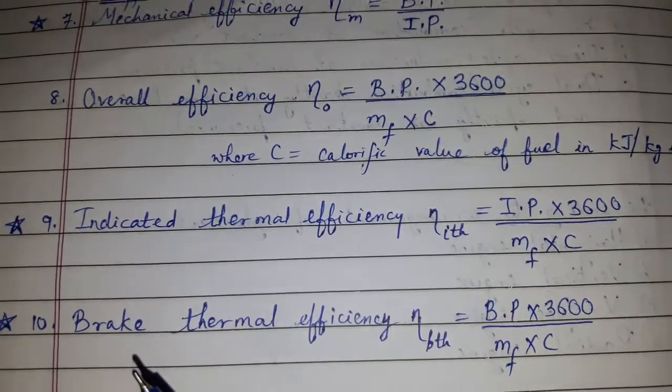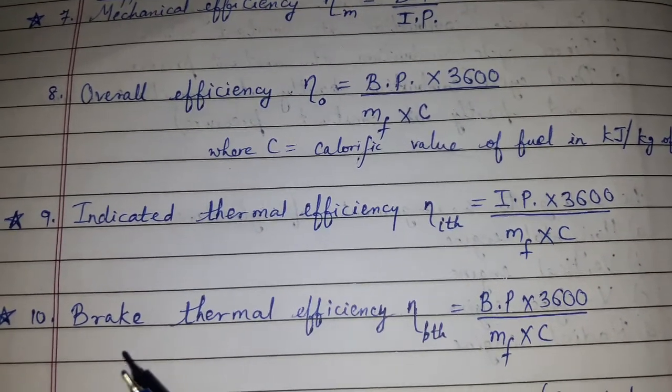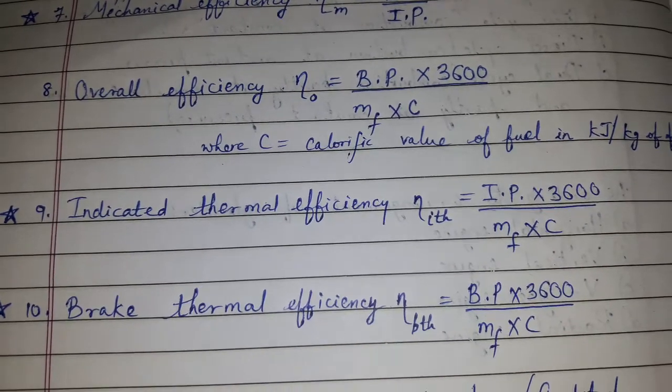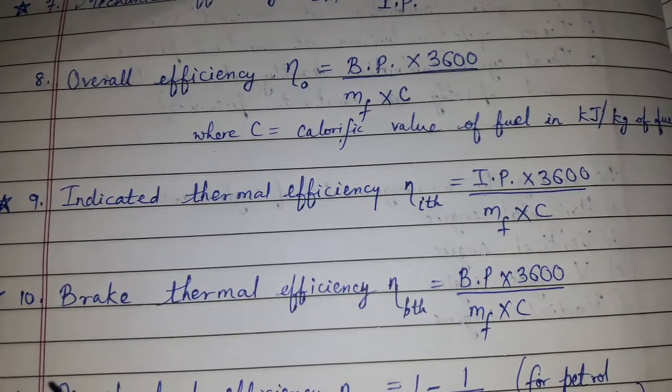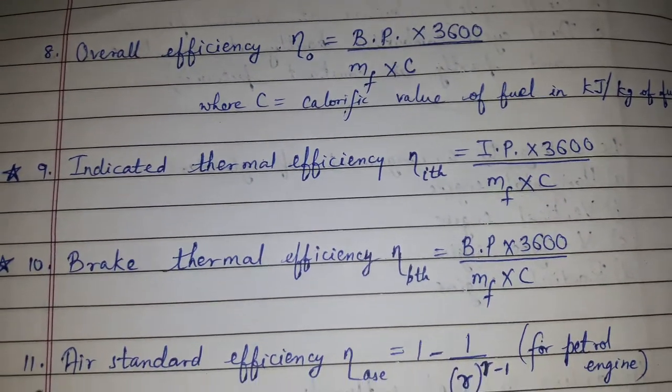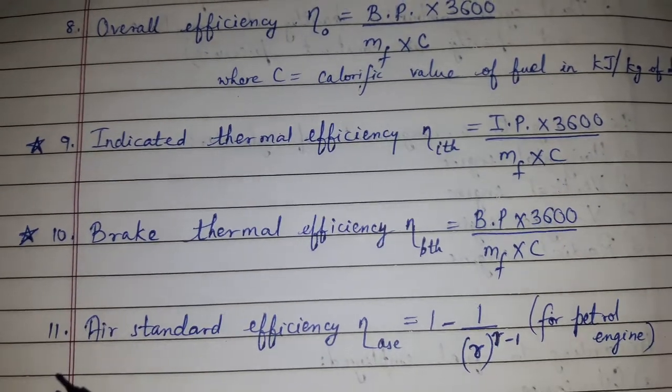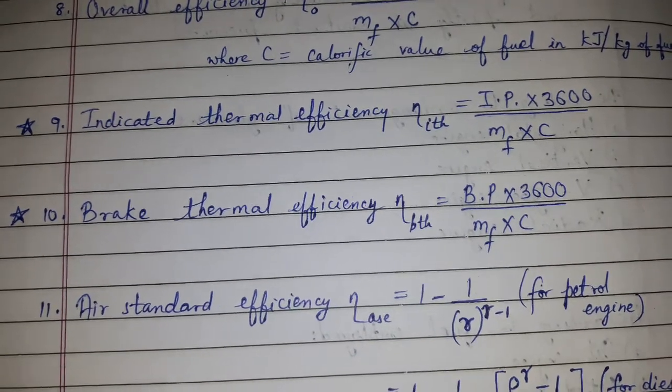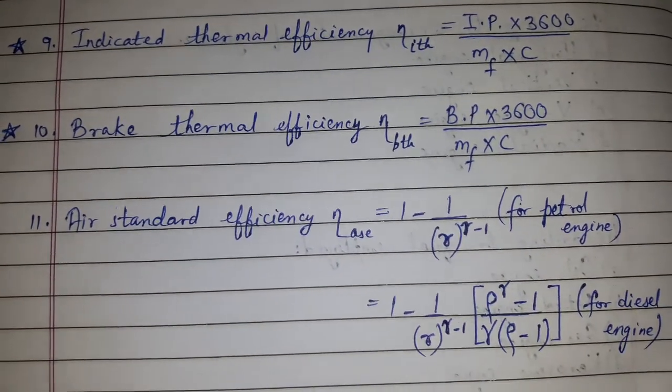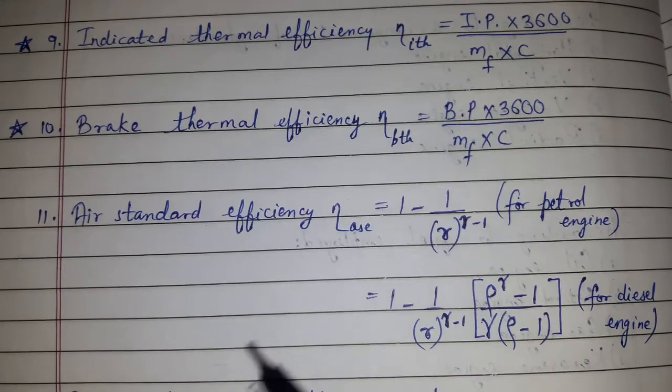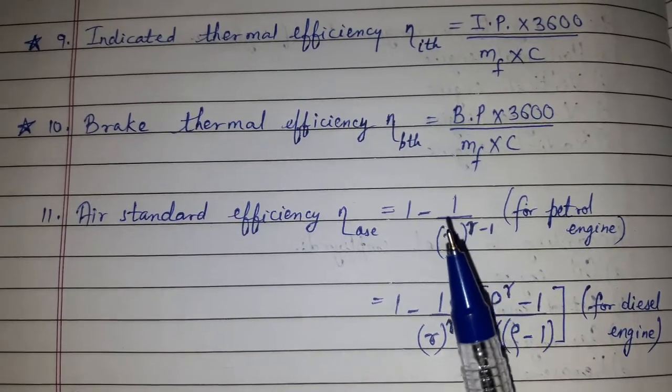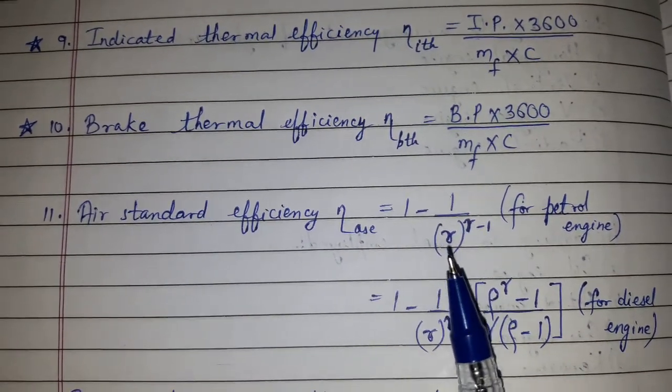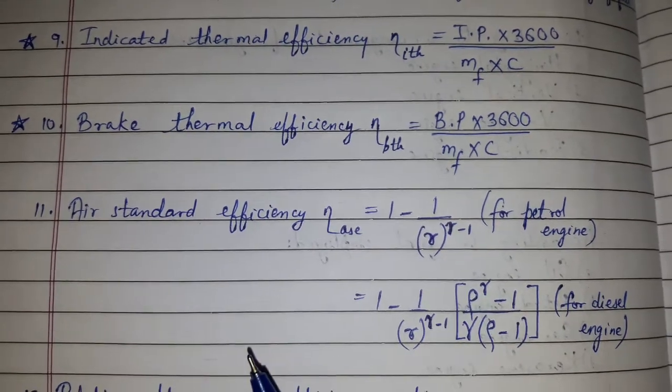Indicated thermal efficiency is equal to IP × 3600 upon Mf × C. Brake thermal efficiency is equal to BP × 3600 upon Mf × C. Air standard efficiency is equal to... Air standard efficiency is given by 1 minus 1 upon R raised to γ minus 1 for petrol engine.